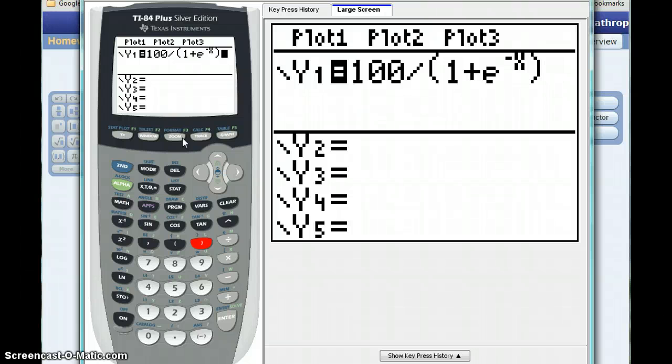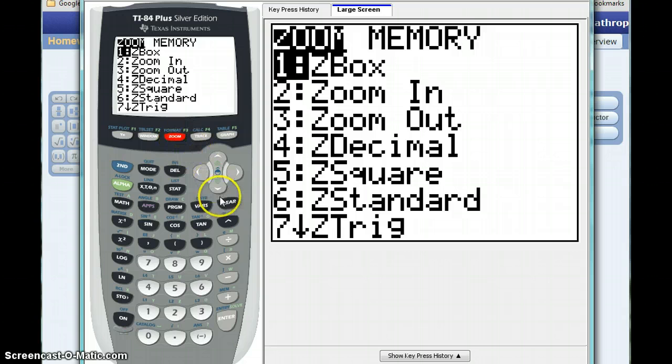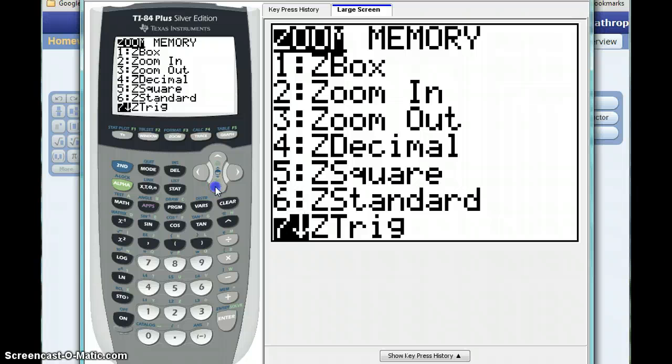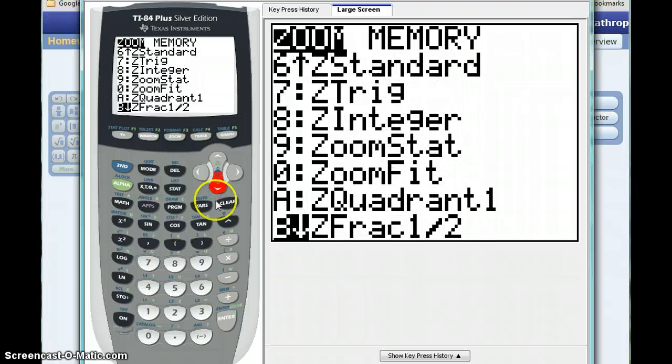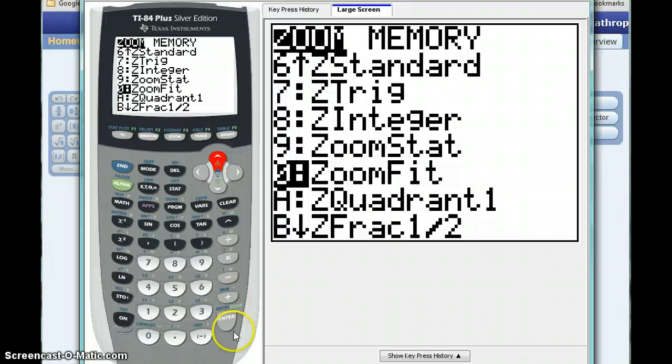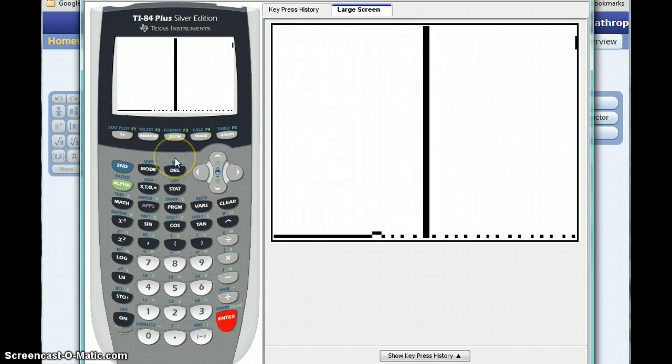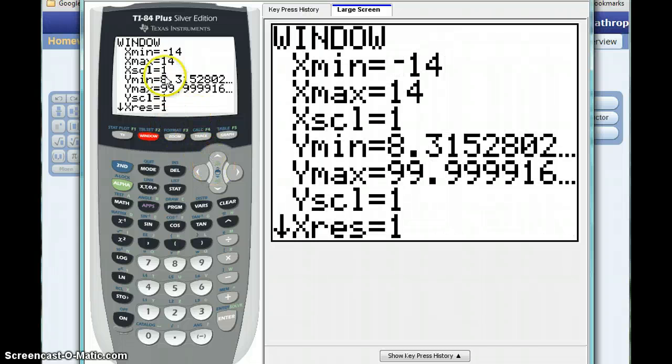We can close that off, but again our window setting isn't going to match the window settings for those options we have to look at. So we'll go back to that zoom screen, go down to that option 0 or the 10th option in the list, select zoom fit. Actually I'm going to go back, I skipped a step. I didn't change my values for xmin and xmax, so let's actually change that. We need our xmin to be 0, xmax to be 7.